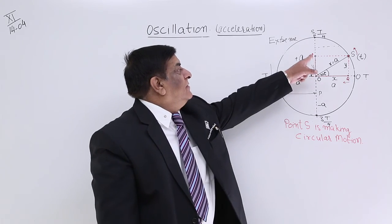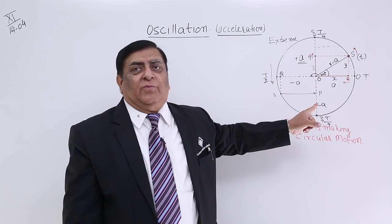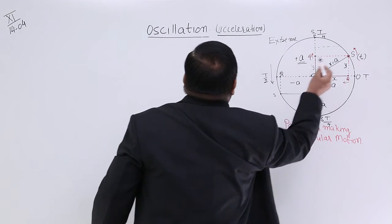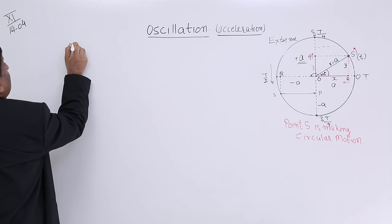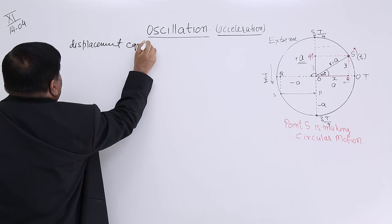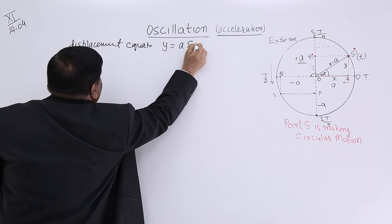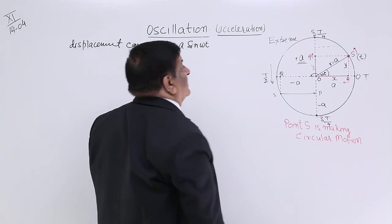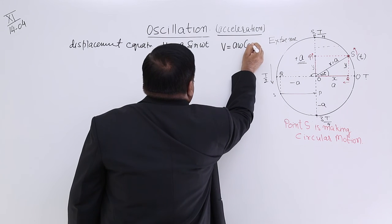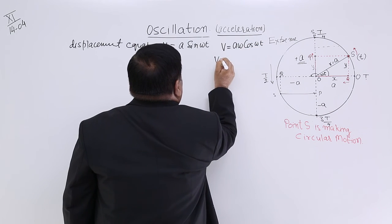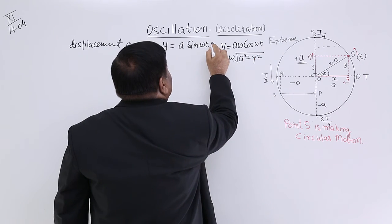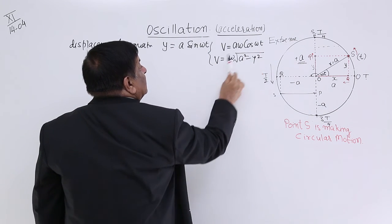So far we have seen that point P, which is making simple harmonic motion, is at a particular point where displacement is y. This y is related with time t and we call it the displacement equation: y = a sin(ωt). At that point it has a certain velocity, and we have two velocity equations — one is aω cos(ωt), and the other in terms of y is ω√(a²− y²).